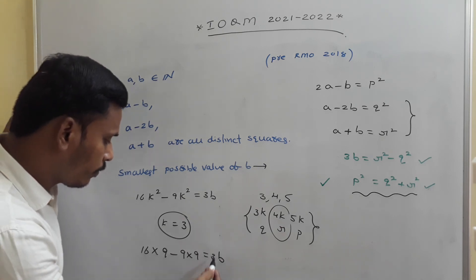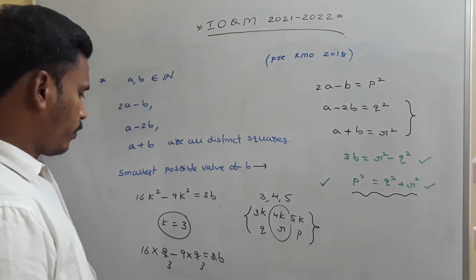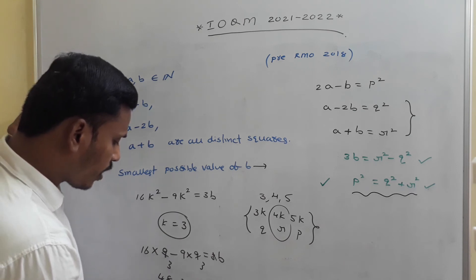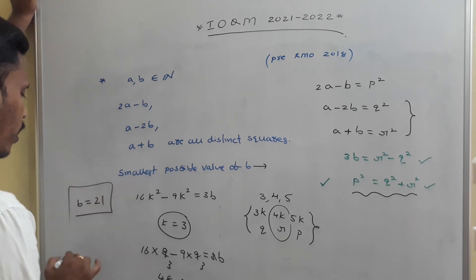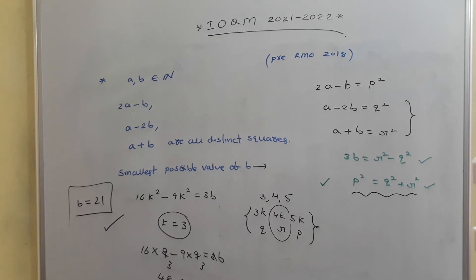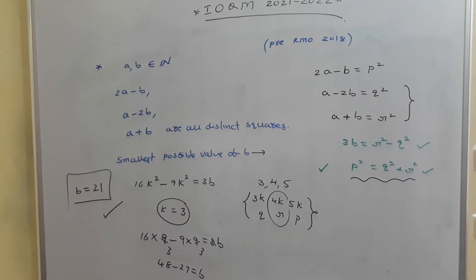Cancelling one factor of 3 from each side: 16 times 3 minus 9 times 3, which is 48 minus 27, equals b. Therefore b equals 21, and that is the smallest possible value of b. This is a question from Pre-RMO 2018.